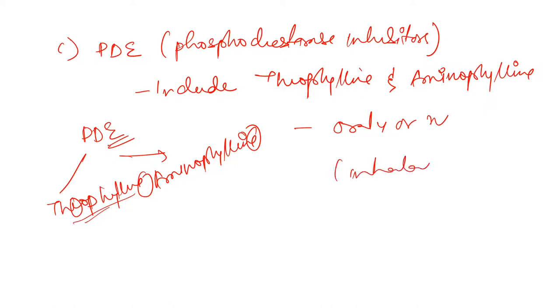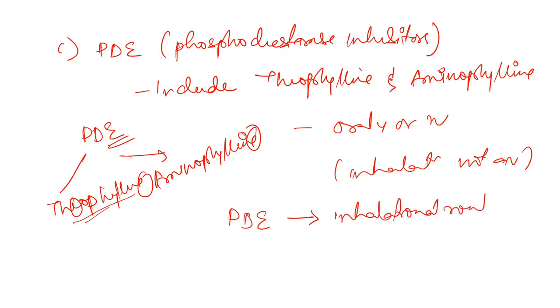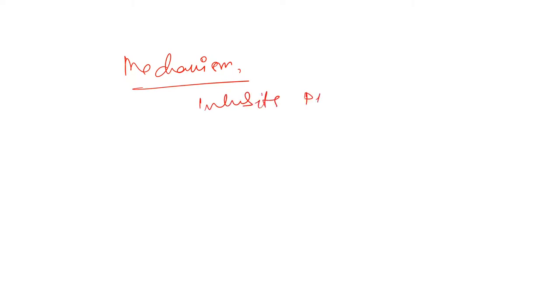An important point about phosphodiesterase inhibitors is that inhalation route is not available. The mechanism of action is that it inhibits phosphodiesterase, and it also acts as an adenosine A1 receptor antagonist.